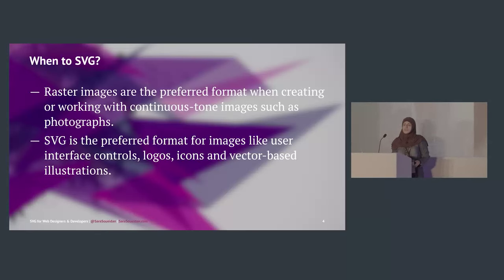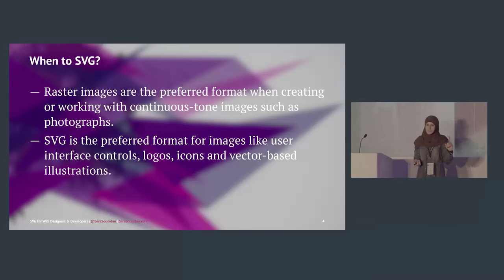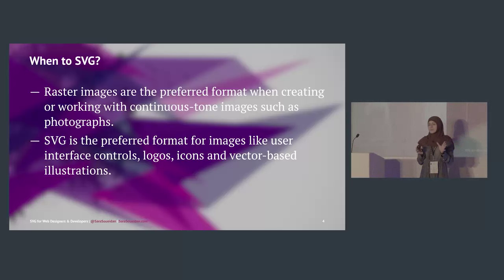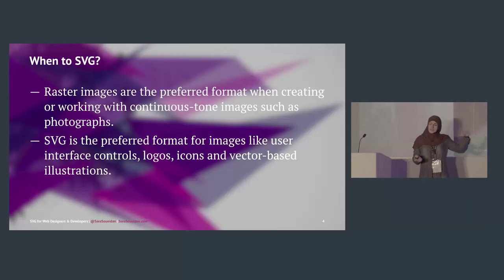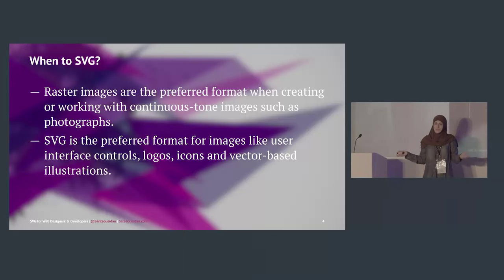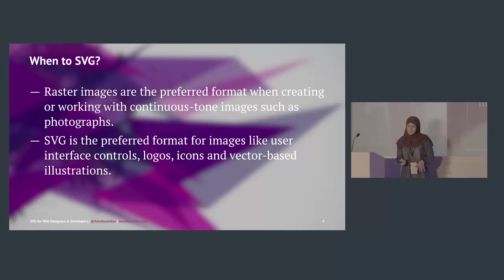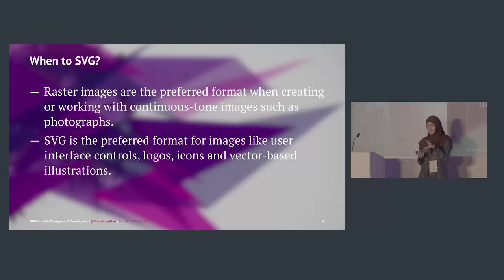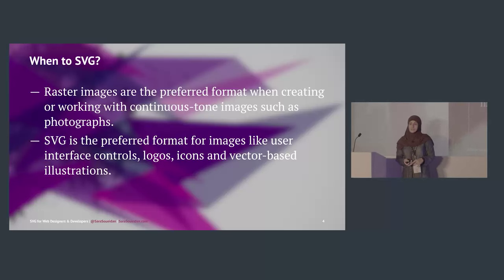When would you use SVG? The rule of thumb I always keep in mind is: raster images — JPEG and PNG — are usually best for continuous-tone images such as photographs. You wouldn't photograph the Big Ben and turn it into an SVG. The best candidates for SVG are interface controls, logos, icons, and vector-based illustrations.